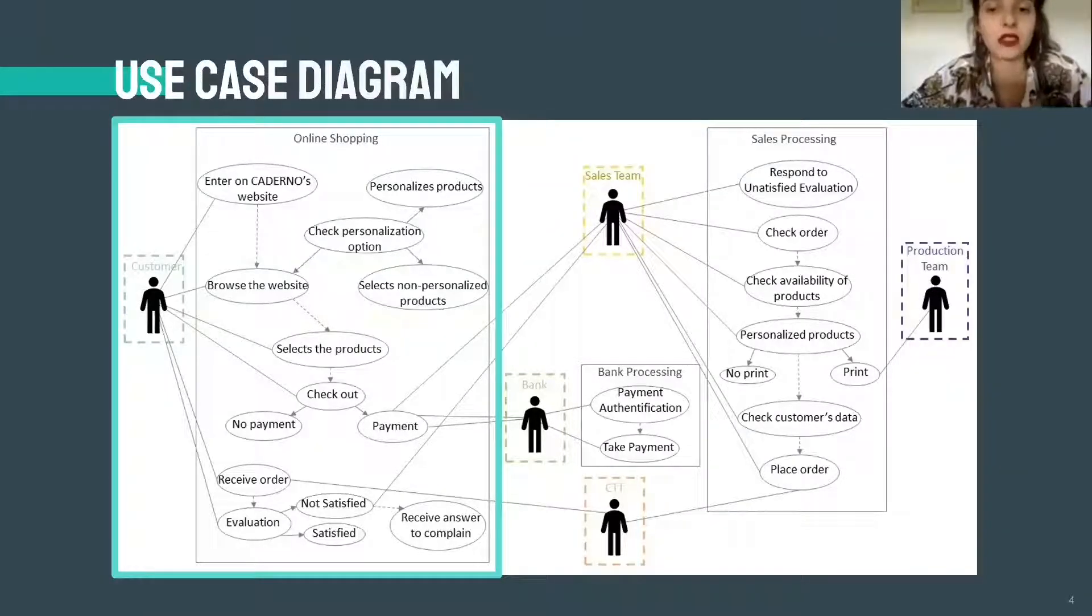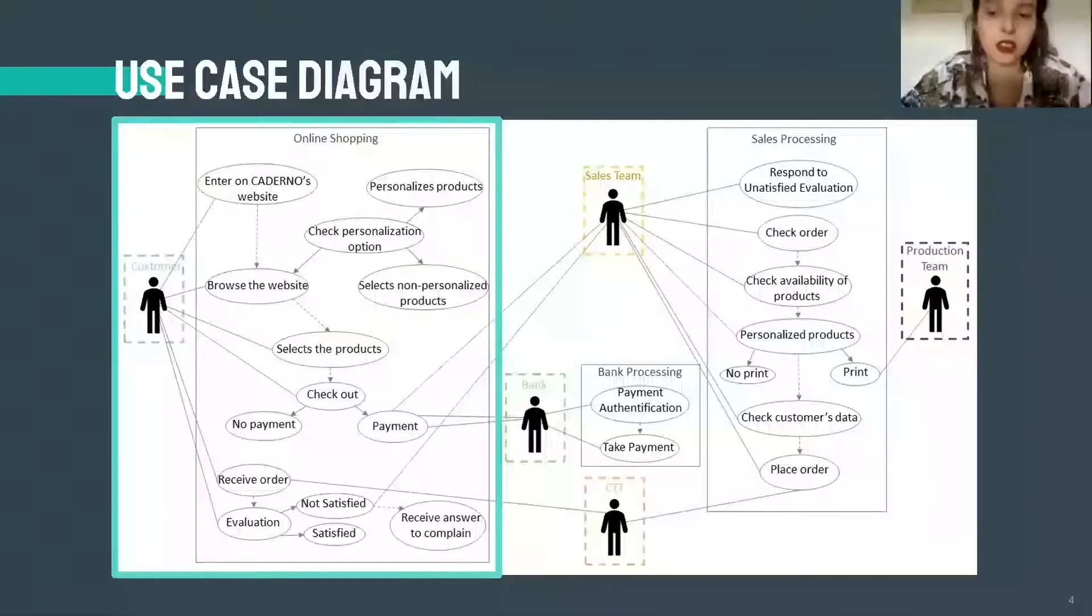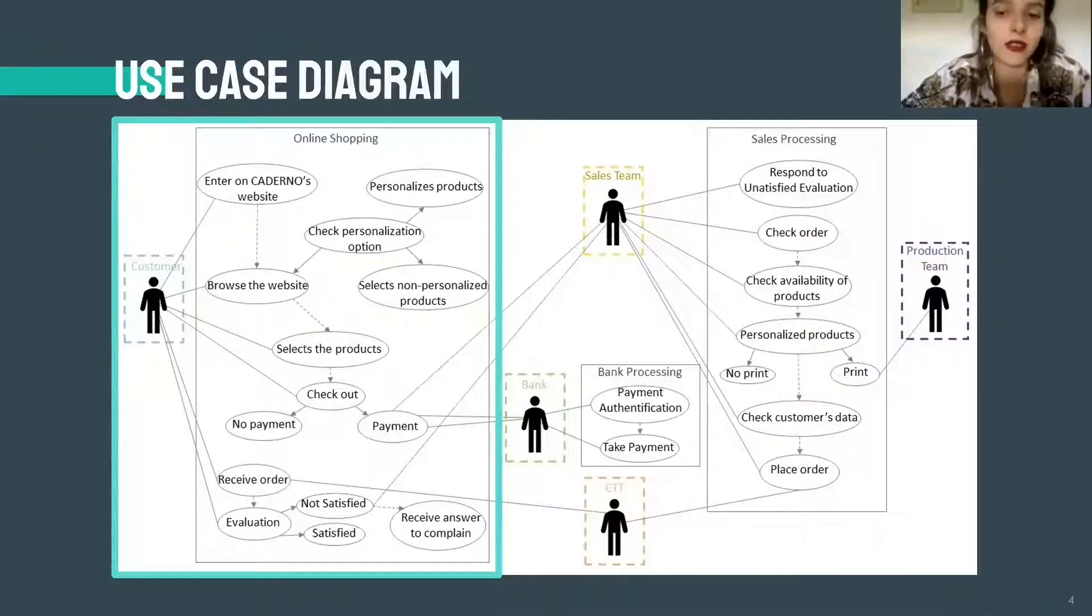Finally, the customer receives the order from the CTT actor and an evaluation can be taken by the client. In case the client turns out not to be satisfied with the company service or quality of the product, there is a direct connection, again with the sales team, that are also responsible to understand and make amends with any customer complaints.